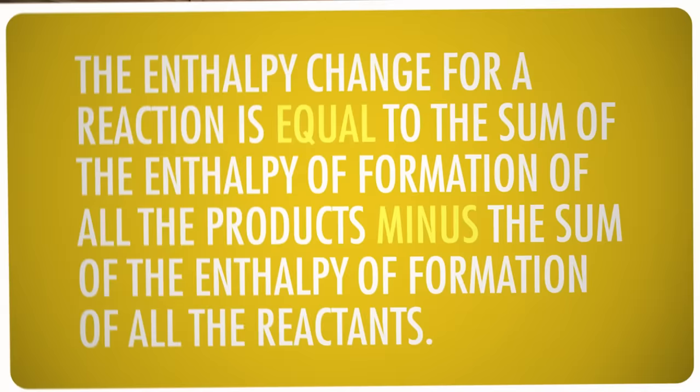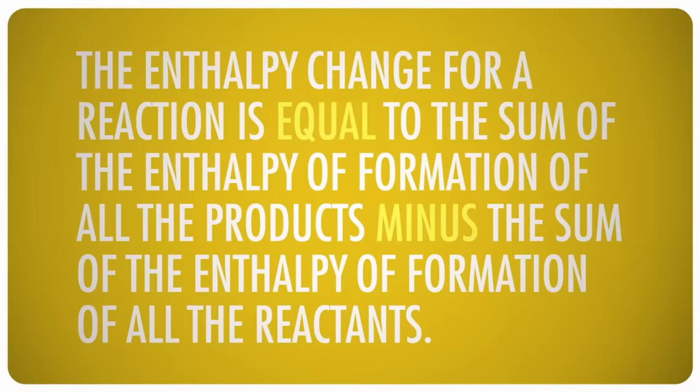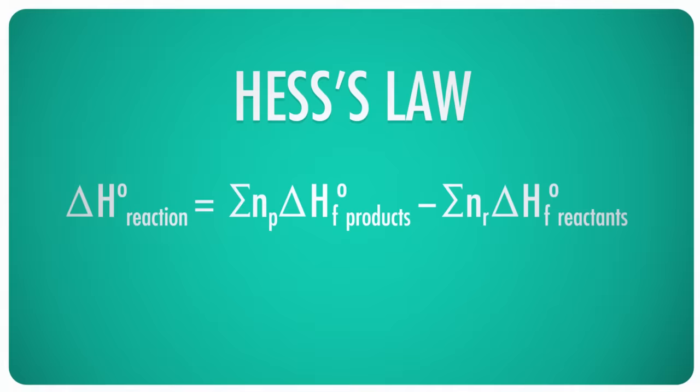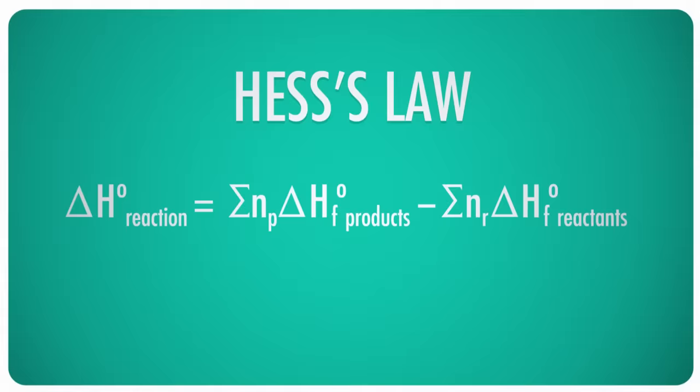Hess's law is often stated in terms of standard enthalpies of formation. The enthalpy change for a reaction is equal to the sum of the standard enthalpies of formation of the products minus the sum of the standard enthalpies of formation of the reactants. Thanks to many hard-working chemists, the standard enthalpy of formation has been measured for hundreds of compounds. We can just look them up in charts and plug them into Hess's law. Speaking of which, here is Hess's law as a mathematical formula. Pretty fancy looking, but it says exactly the same thing. The enthalpy change for a reaction equals the sum of the standard enthalpies of formation of the products minus the sum of the standard enthalpies of formation of the reactants. That pointy little funny-looking thing is the capital Greek letter sigma, and it means the sum of. NP and NR are the moles of each product and reactant respectively. We have to factor that in because remember the standard enthalpy of formation is measured for just one mole of the substance. If the chemical equation uses more than that, we have to multiply the standard enthalpy of formation by the number of moles in the equation.